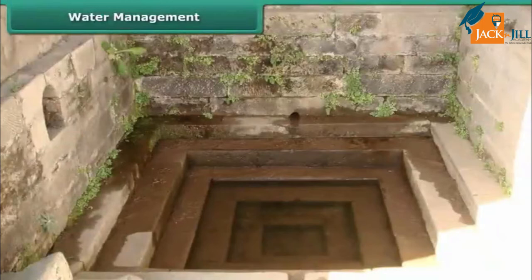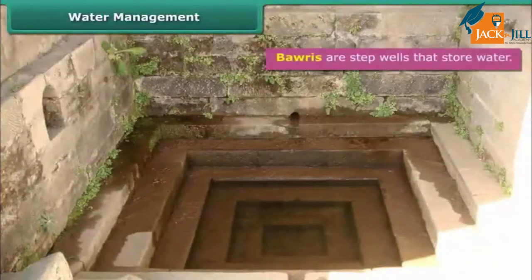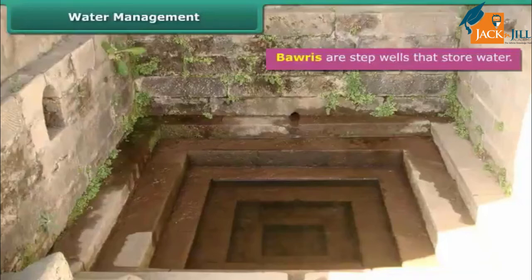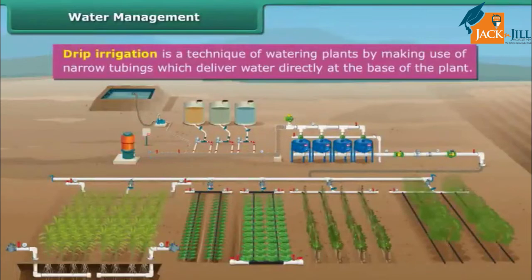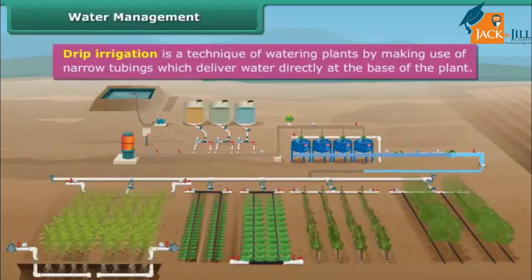The traditional way of collecting water can be revived. Bawaris are step wells that store water; the stored water can be reached by descending a few steps, and bawaris can also be multi-storied. A farmer can use the drip irrigation system to water his fields and conserve water. Drip irrigation is a technique of watering plants by making use of narrow tubings which deliver water directly at the base of the plant.